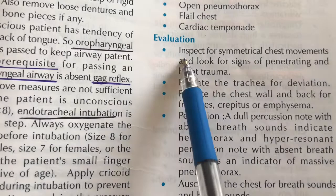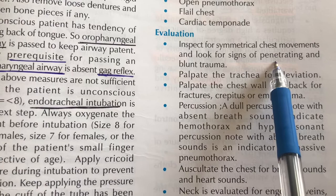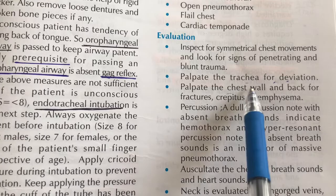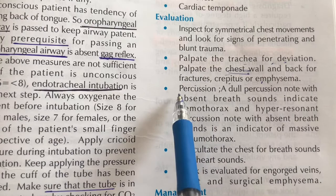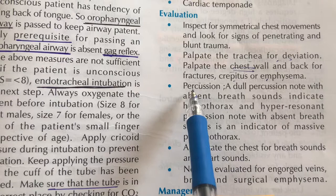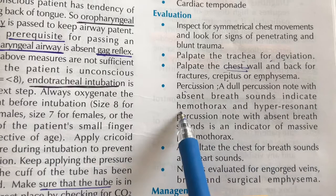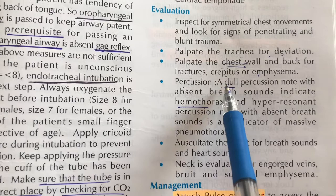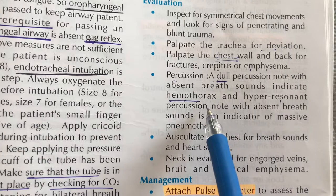When inspecting the chest, we check whether chest movements are symmetrical, and whether there is penetrating or blunt trauma. We palpate the chest for tracheal deviation, rib fractures, and subcutaneous emphysema. Percussion of the chest wall is performed next: a dull percussion note with absent breath sounds indicates hemothorax. A hyper-resonant percussion note with absent breath sounds indicates pneumothorax. Diminished heart sounds with raised JVP may indicate cardiac tamponade.